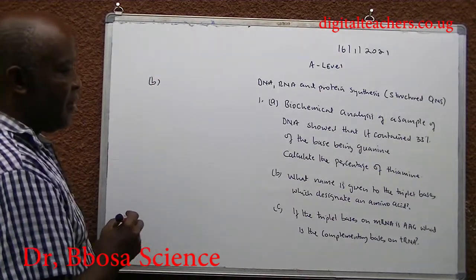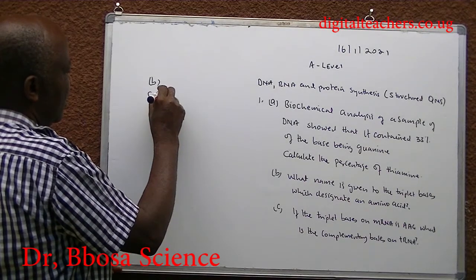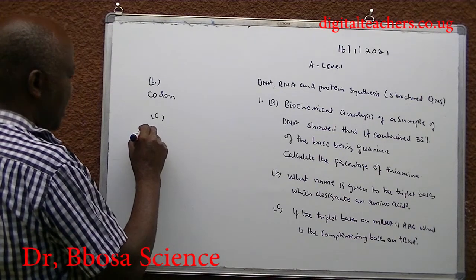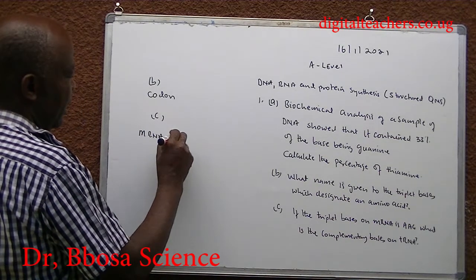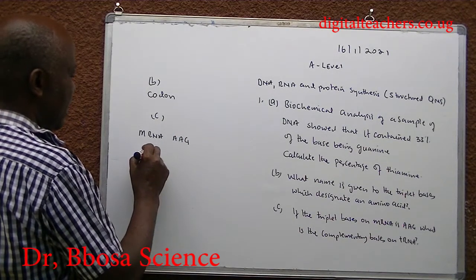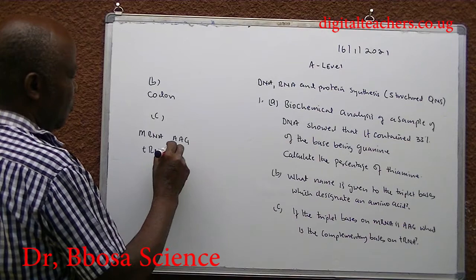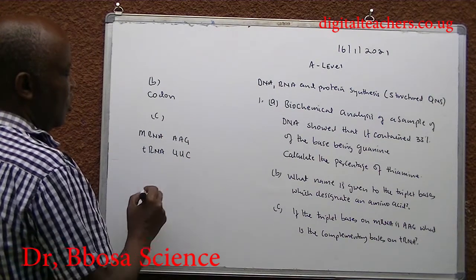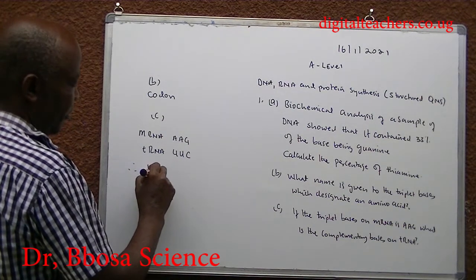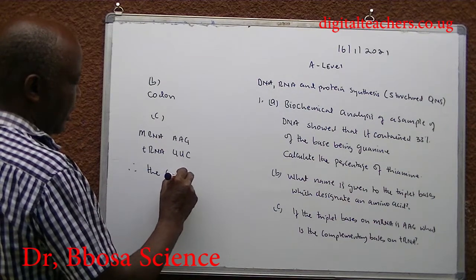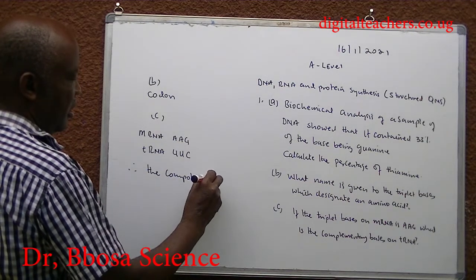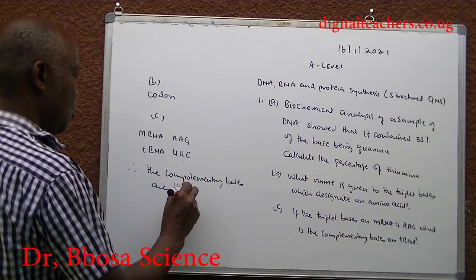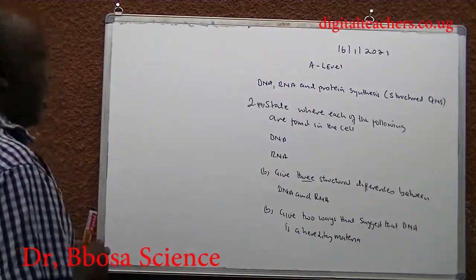B. The name given to the triplet bases is called Codon. Then C, if messenger RNA is AAG, then tRNA will be equal to: A goes with U, A goes with U, G goes with C. Therefore, the complementary bases are U, U, C.